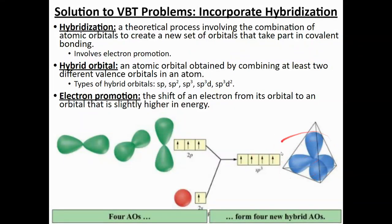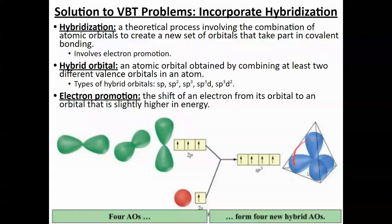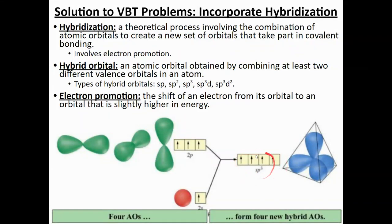These SP3 orbitals have a new shape that can better predict bond angles and the overall shape of molecules. It can also better predict the number of bonds that an atom can form. In certain atoms, their orbitals can combine to form new combo orbitals — what we call hybrid orbitals — to better explain the shape of many molecules.